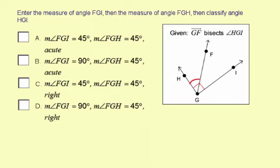That means each of these angles are going to be the same measure. They'll be congruent. So angle HGF is congruent to angle FGI.